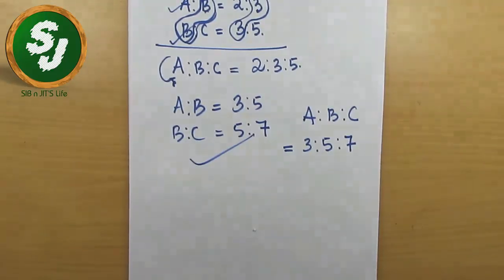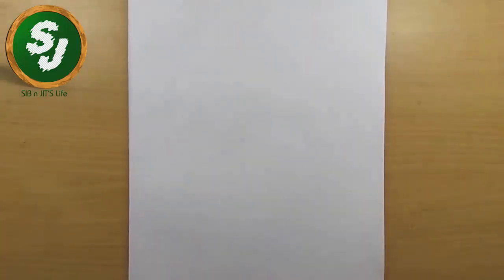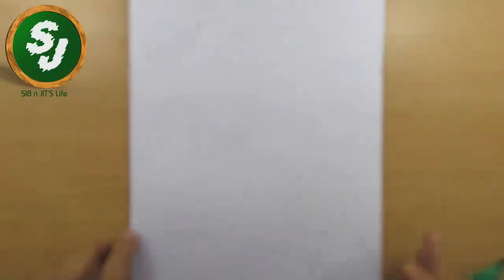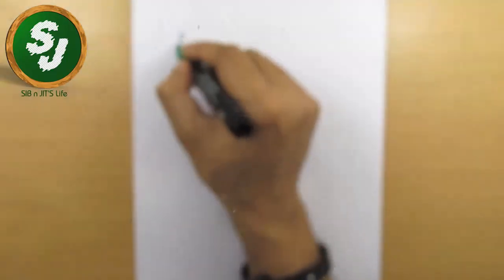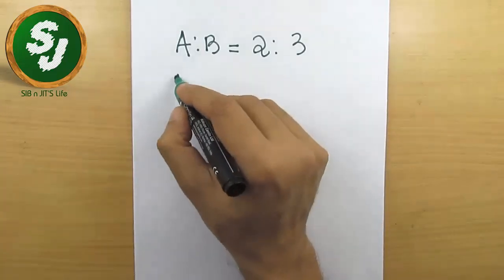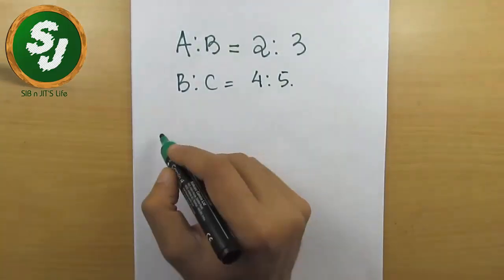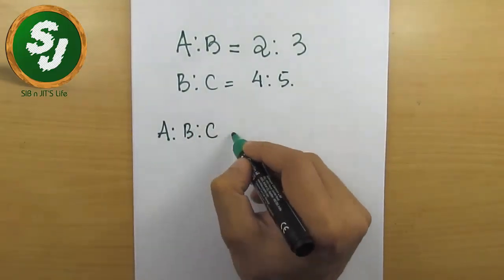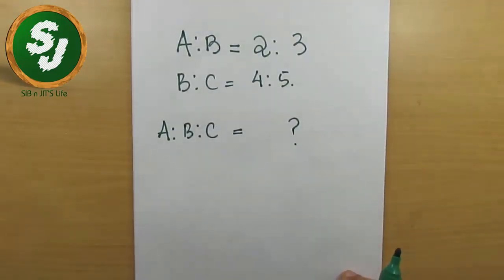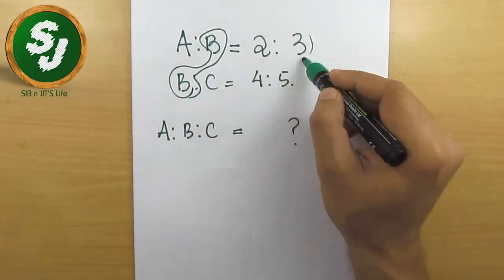What happens when the two b values are not the same? There is another trick you need to understand to find the answer quickly. For example: a:b = 2:3 and b:c = 4:5. Find a:b:c. Here the b values, 3 and 4, are not the same.